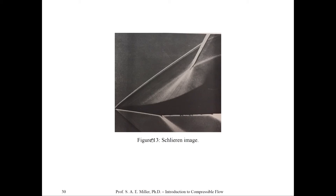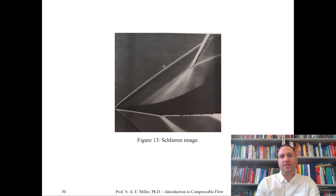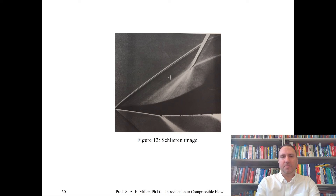Here's another Schlieren image — Figure 13. This one is more of a scoop or wedge mounted in a wind tunnel with the air moving from left to right. In the previous visualizations we held the camera still and let a projectile go from right to left. In this case we let the flow in the wind tunnel go from left to right and hold the device still. You can see the flow comes from the left and there's a shock wave that forms from the leading edge of the vehicle, and these waves coalesce into another shock. We'll look at this as a homework problem on oblique shock waves.